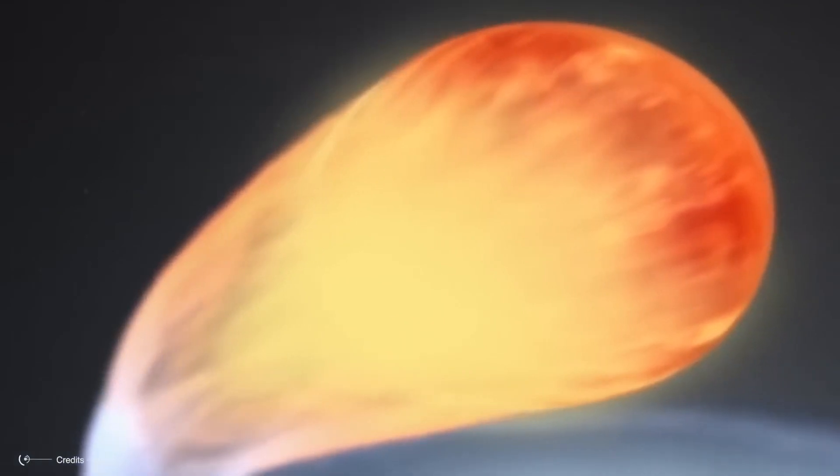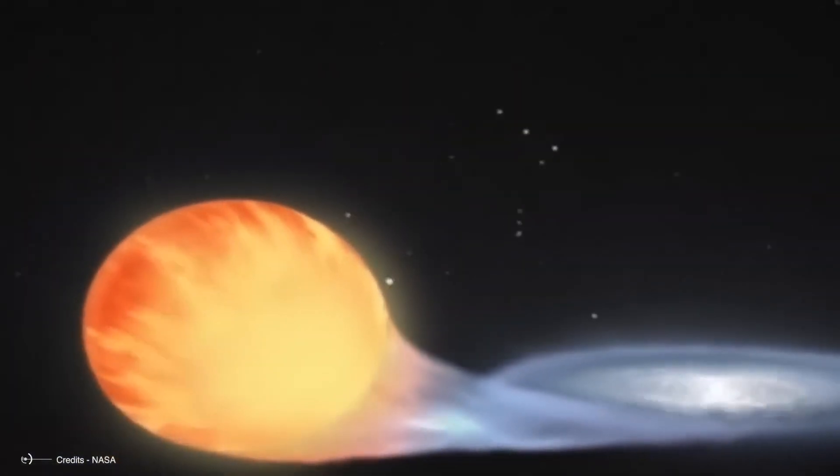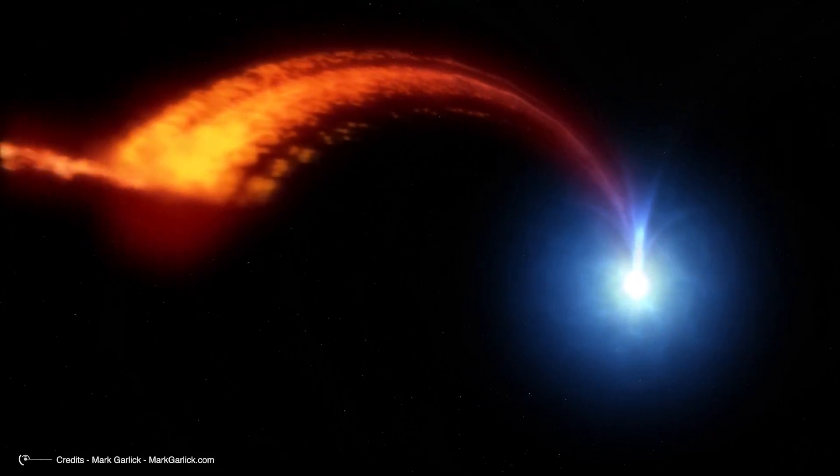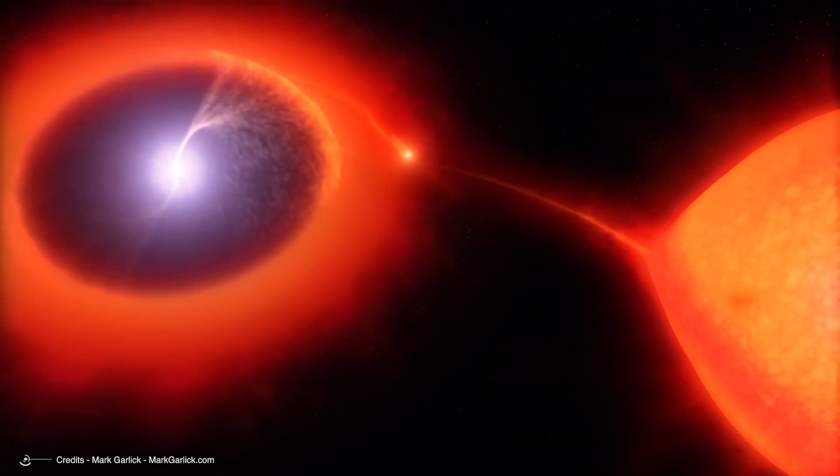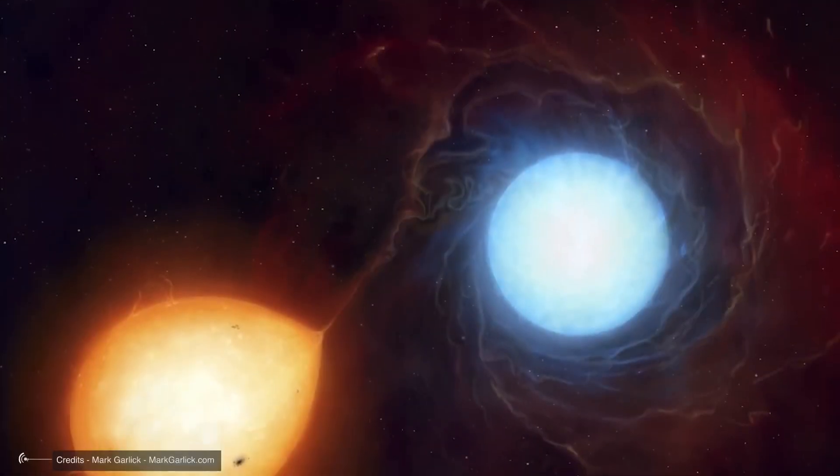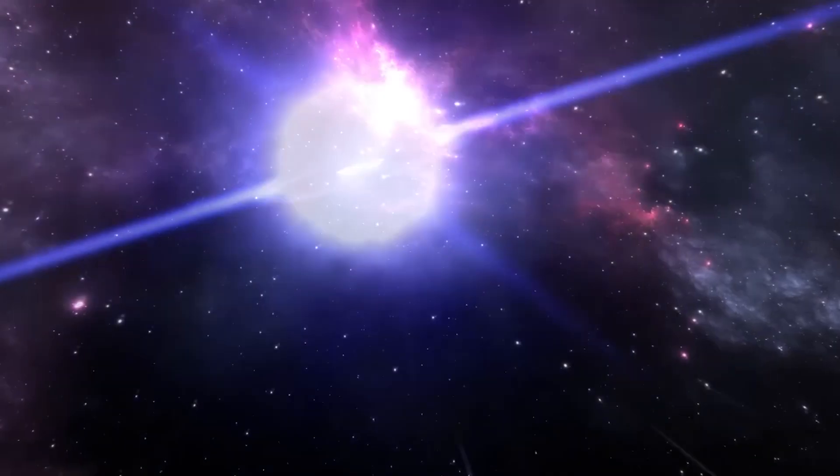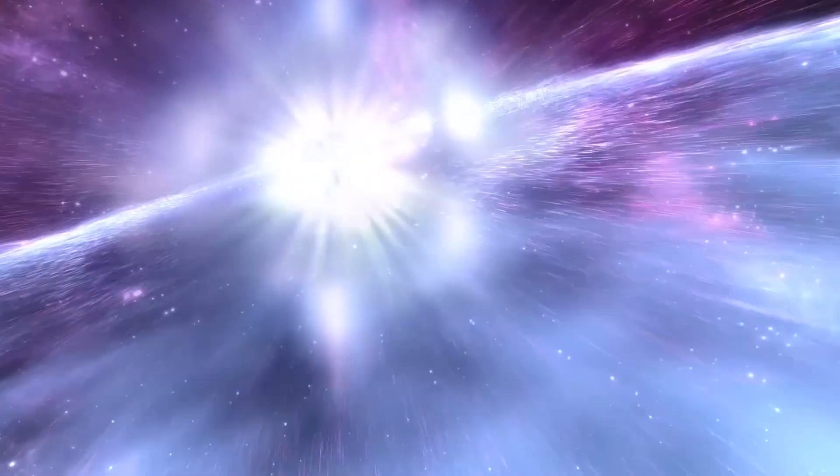It's a slow process, like filling a bathtub with a slow drip. It takes around 80 years for the white dwarf to collect enough material to reach that critical point. And that tipping point is where the pressure and heat become too much and boom, the nova explosion happens.